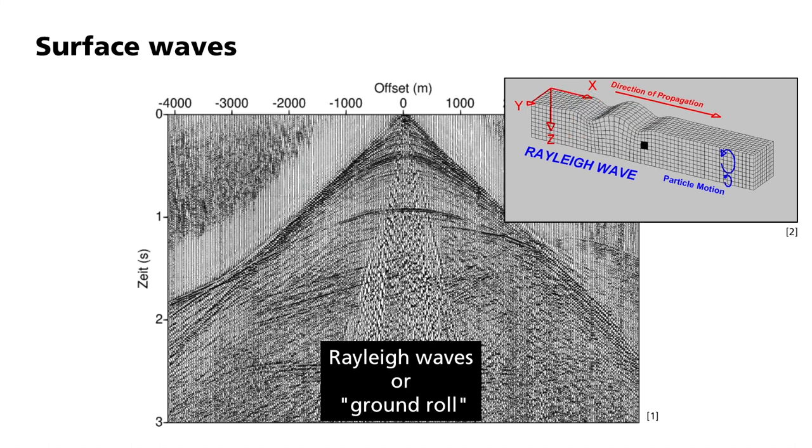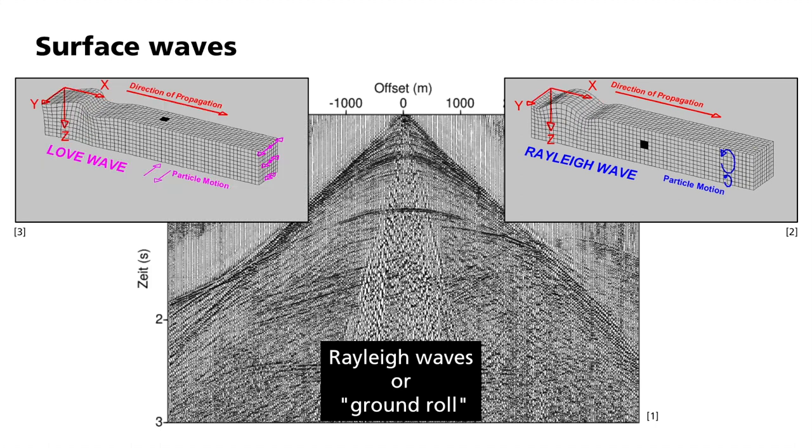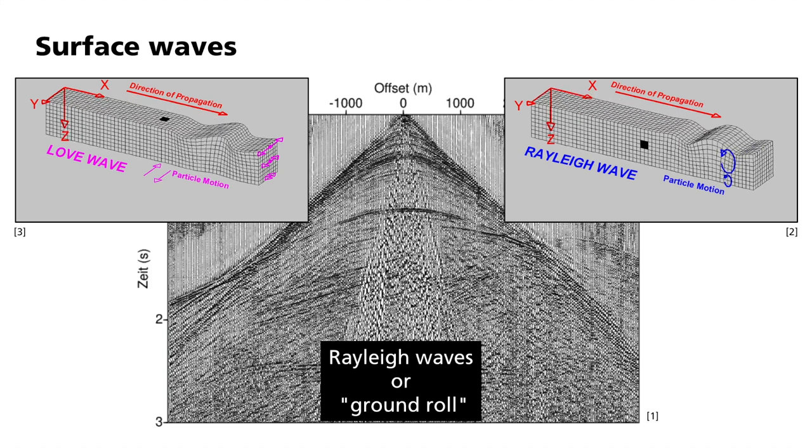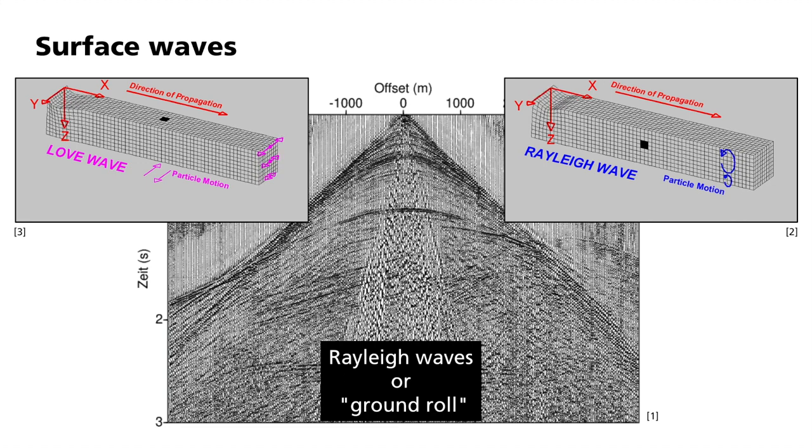The second type of seismic surface wave is the so-called Love wave, which is formed as a result of the interference of horizontally oscillating transverse waves. The animation shows the shear movement transverse to the direction of propagation.